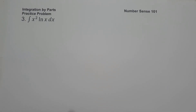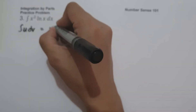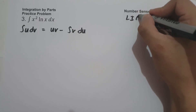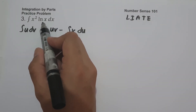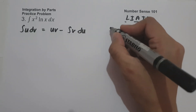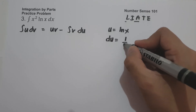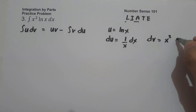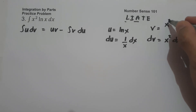On example number 3, what is the antiderivative of x squared ln x dx? Using the formula and the LIATE acronym, x squared is algebra and ln x is a logarithm. Logarithm comes first before algebra, therefore u = ln x. And du, the derivative of ln x, is 1/x dx. Then dv = x squared dx, and v, the antiderivative of x squared dx, is x cubed over 3.